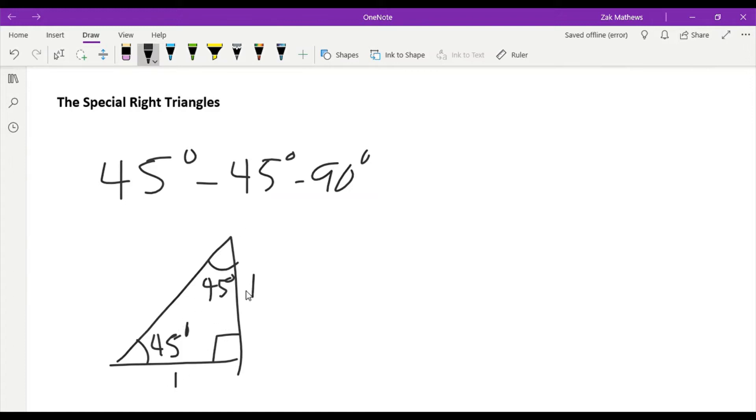And then I'll call the hypotenuse H. We would take H squared equals one squared plus one squared. So H squared would be equal to two. And H is equal to the square root of two.